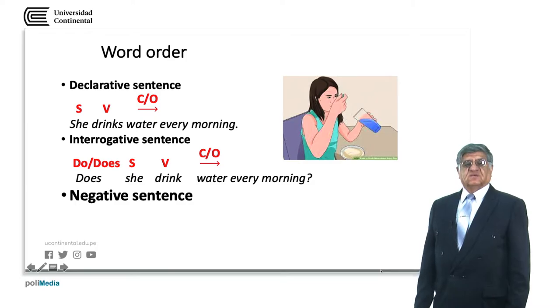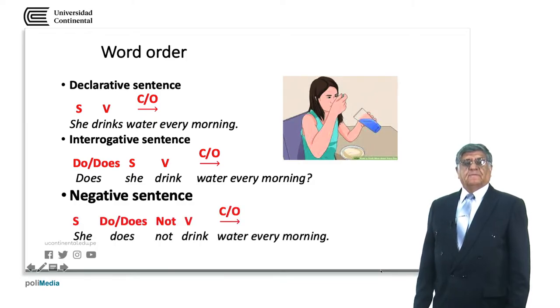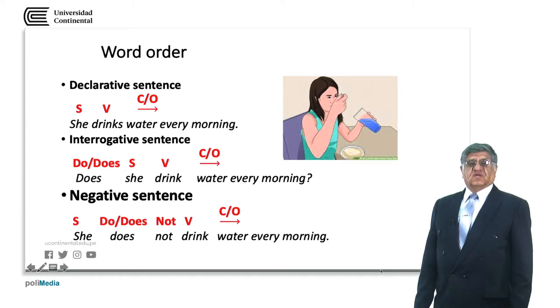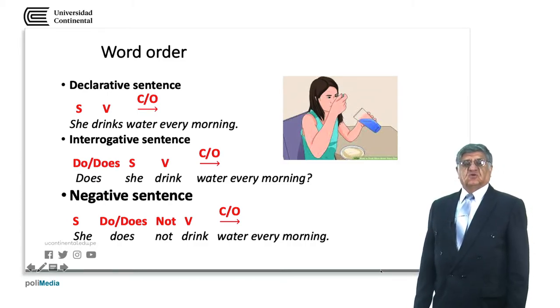For negative sentences, we have the same use of the corresponding auxiliary to the person. She is the third person singular. The auxiliary is does. The negative particle is not. The verb is drink also in the infinitive and the complement is water every morning. She does not drink water every morning. Contracted, it might become she doesn't drink water every morning. But remember, contractions are for informal English.